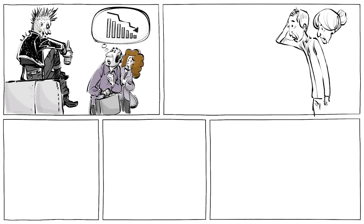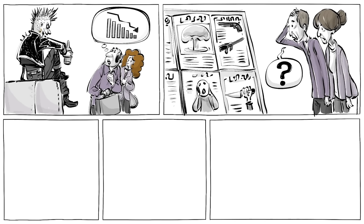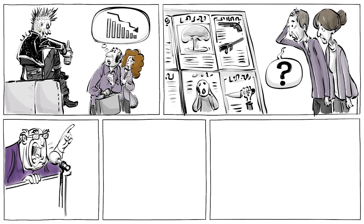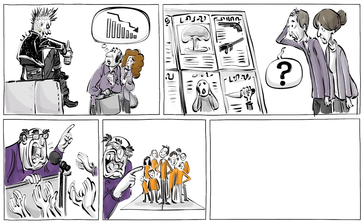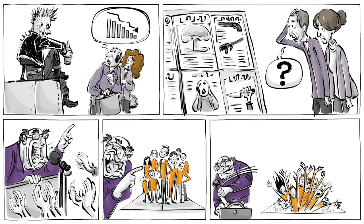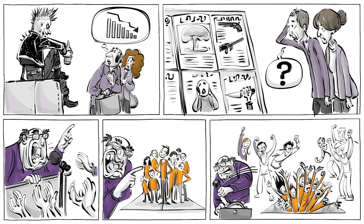When living conditions worsen and the economy fails, people try to find reasons for their troubles. This is when political extremists can become popular as they blame certain groups of people and promise that by getting rid of them, society's problems will go away.